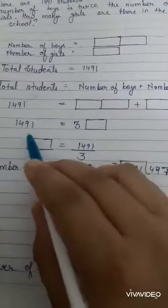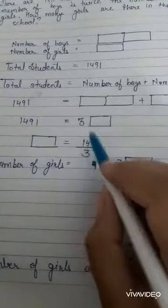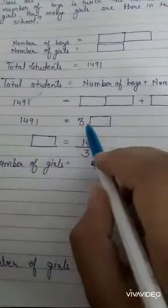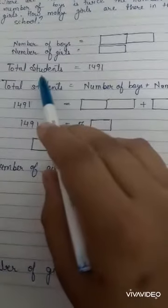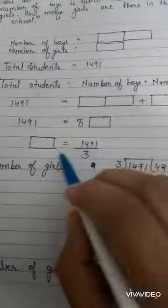So value of one box is equals to - we will just divide it because it is three times. Because total number of students is just three times, we will divide it.